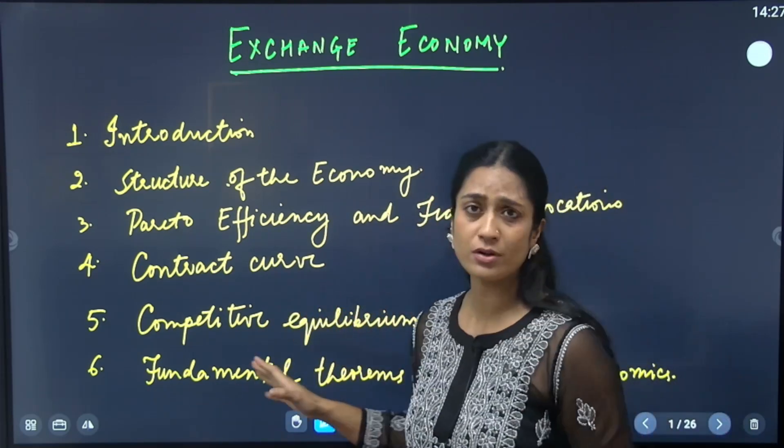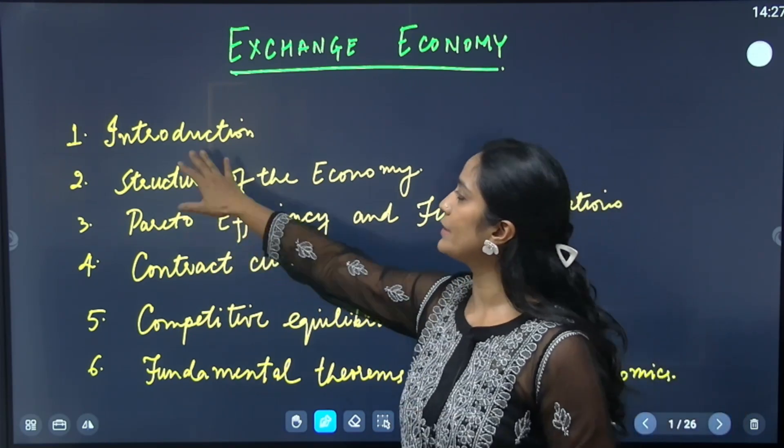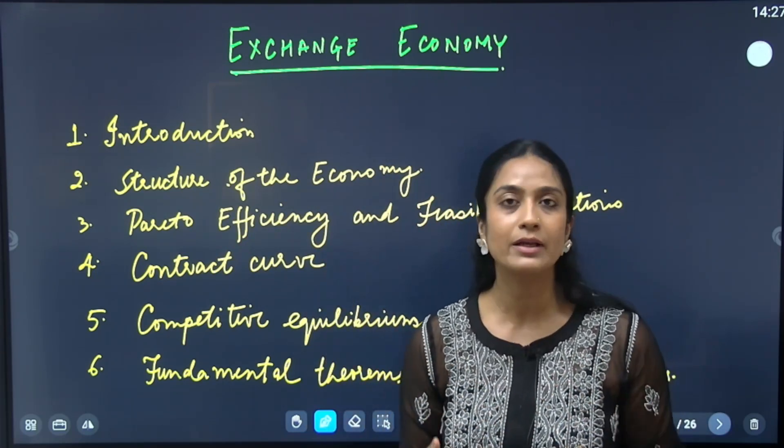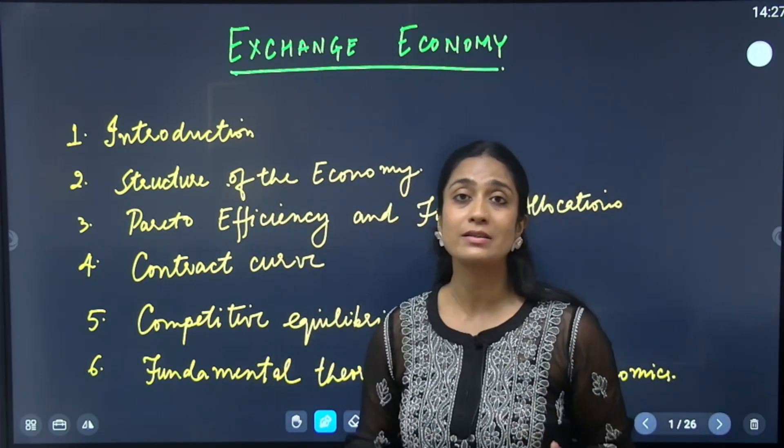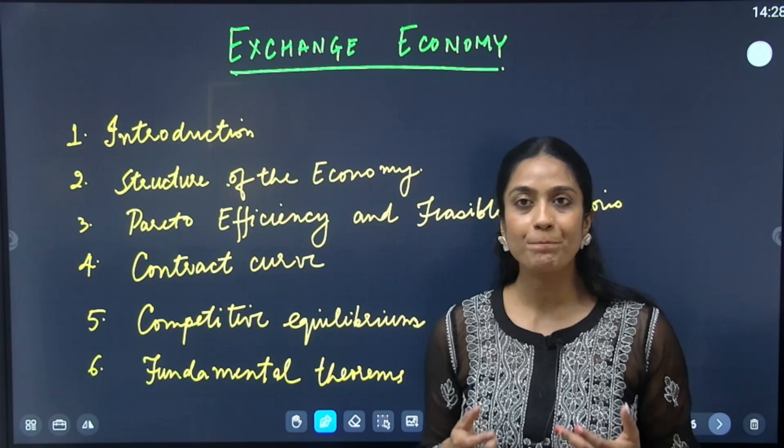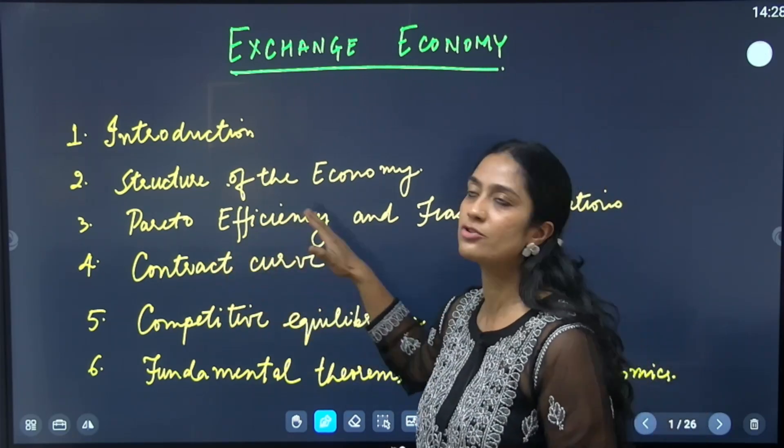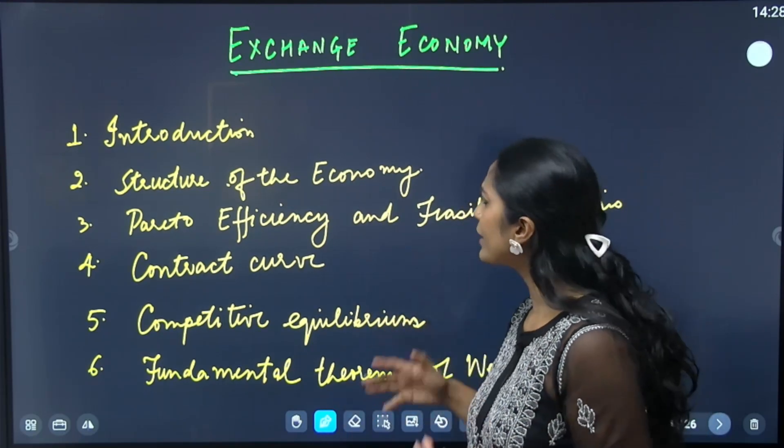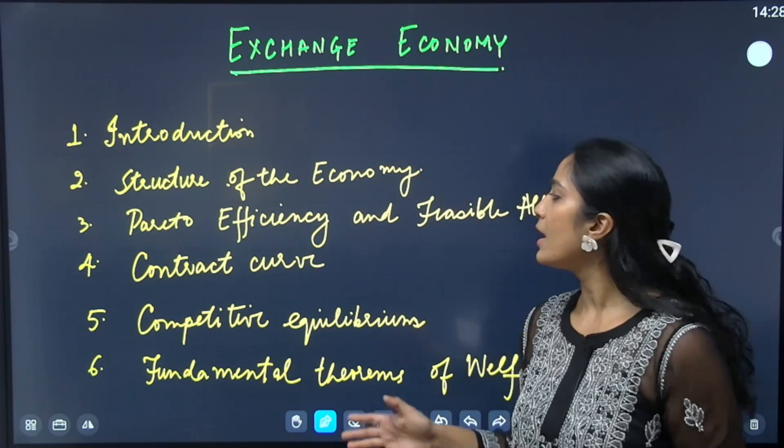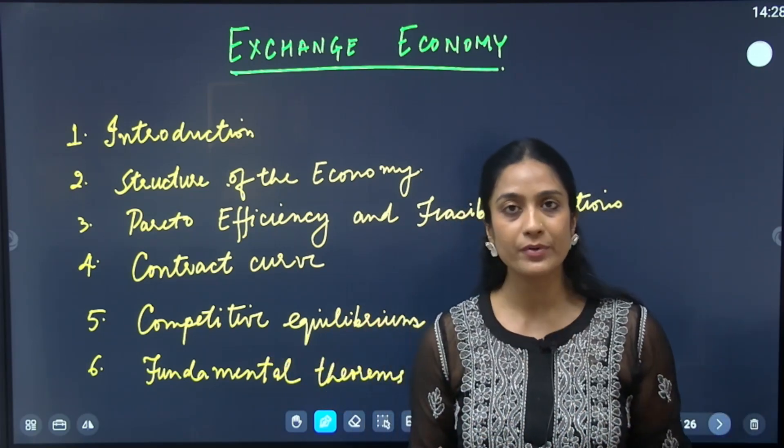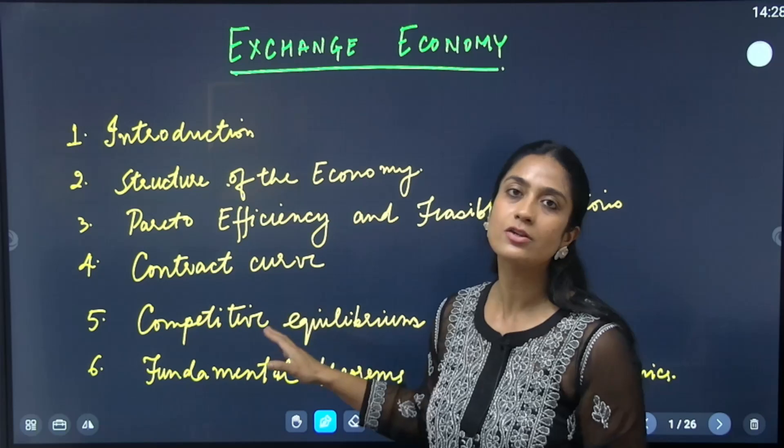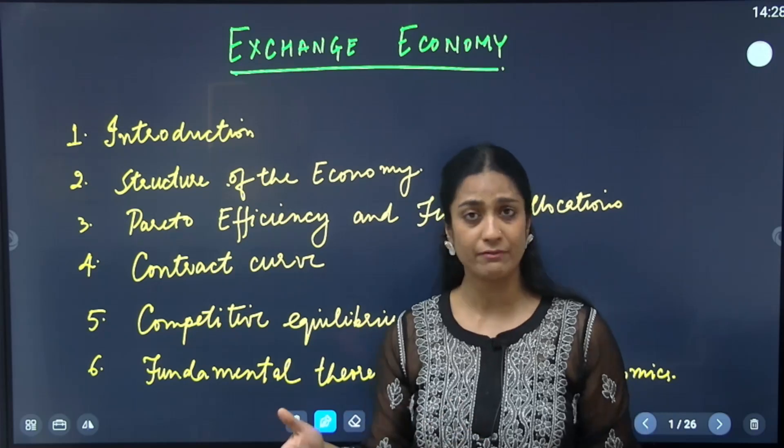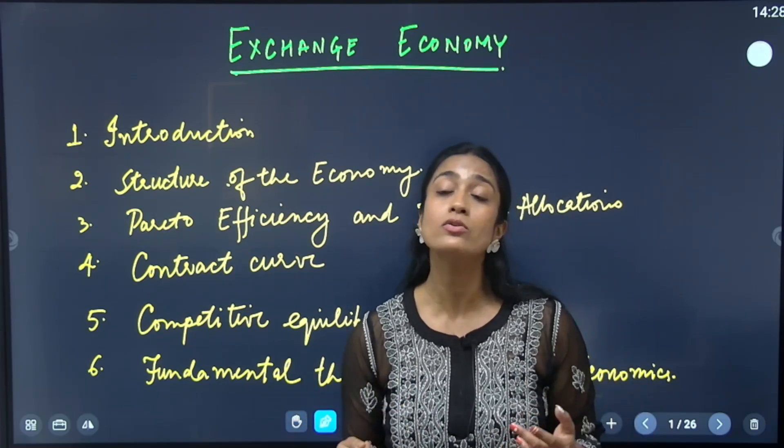So, this is the basic structure of this lecture that these are the points that we will be covering. So, we will start with an introduction of what we are trying to do and why we are trying to do this. Then we will go on to discuss the structure of the economic model that we will study. And this is where we will also introduce the Edgeworth box that you must have learnt about. Then we will talk about the concept of welfare in this economic model of ours. We will use the concept of Pareto efficiency or Pareto optimality. And we also discuss what is a feasible allocation in this context. Then we will move on to what is called a contract curve. I will explain everything. Finally, we will see how we reach a competitive equilibrium. And after this entire discussion, we will finally discuss what are the fundamental theorems of welfare economics. So, these are also called the welfare theorems. First welfare theorem and second welfare theorem. And we will see what these theorems are all about and what they are essentially saying.